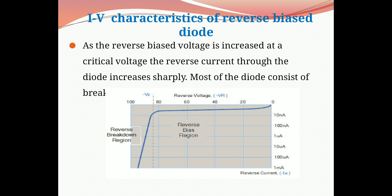Here is the graph showing the IV characteristics of reverse bias PN junction diode. On the x-axis there is reverse current denoted by IR, and on the y-axis there is voltage denoted by VR.